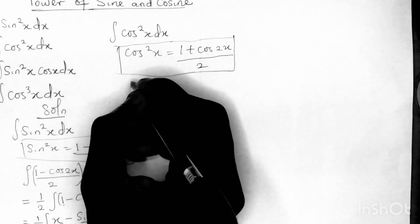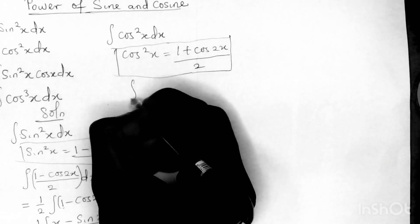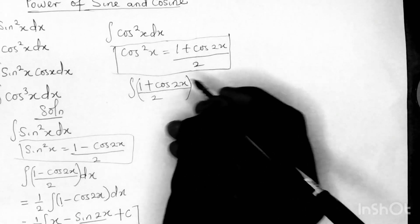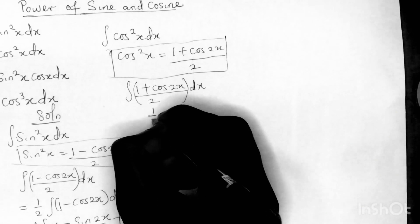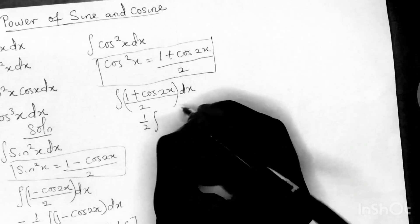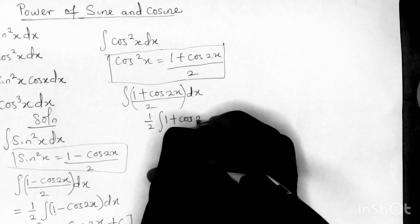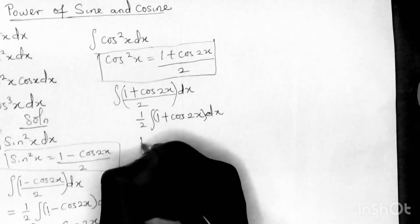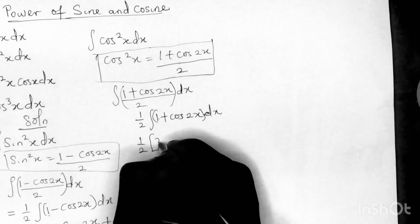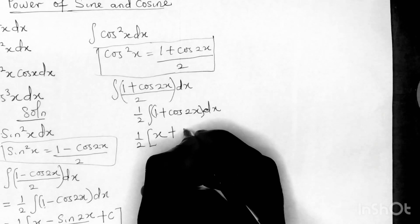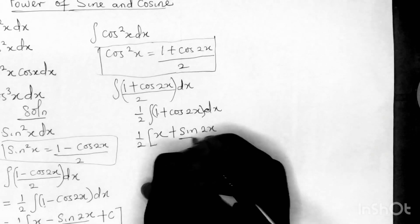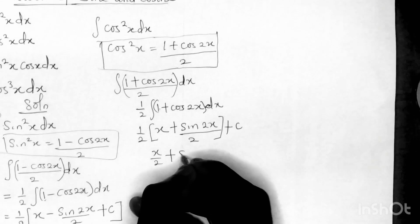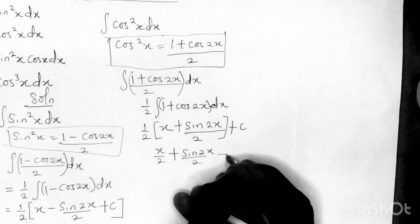So the integral becomes the integral of (1 plus cos 2x) over 2 dx. Bringing 1/2 outside gives (1/2) times the integral of (1 plus cos 2x) dx. Integrating: 1 gives x, and cos 2x gives sine 2x over 2, plus C. Multiplying through gives x over 2 plus sine 2x over 4, plus C.